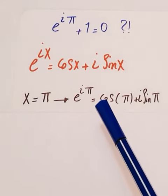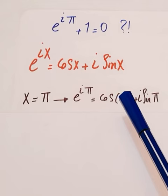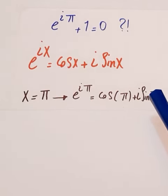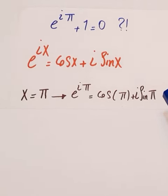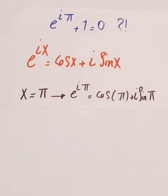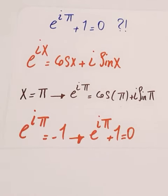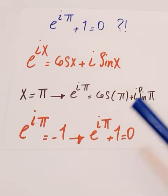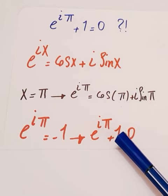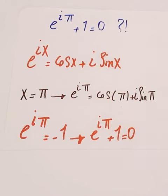Cosine pi is equal to minus 1, sine pi is equal to 0, and 0 times i is equal to 0. So, e to the i pi is equal to minus 1, and therefore e to the i pi plus 1 is equal to 0.